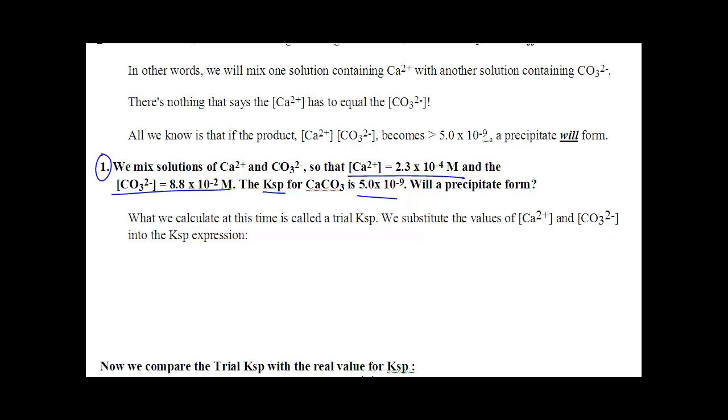Scroll down through your notes. We're starting right here. In this question, we are going to mix calcium and carbonate. Those are the molarity, 2.3, 8.8. The real KSP is 5 times 10 to the negative 9. We need to know if these concentrations max out this solution. So we have to do the trial KSP. We don't know if this is the real one or not, but we have to compare it to the real one. So the trial KSP is CA plus 2 times CO3 minus 2.